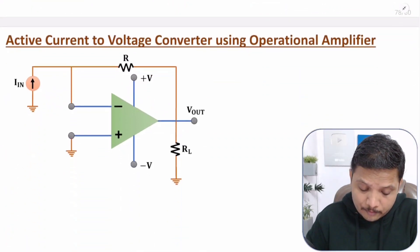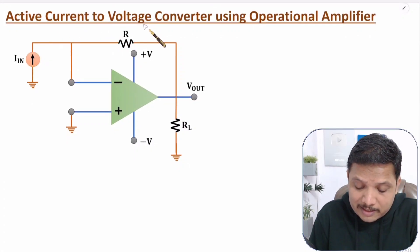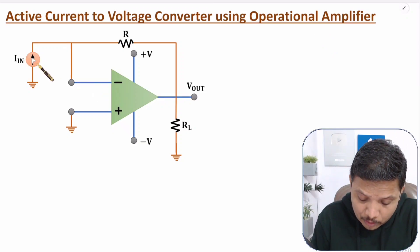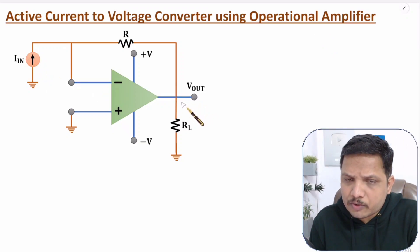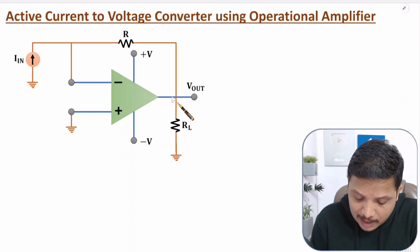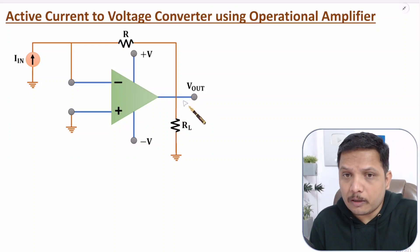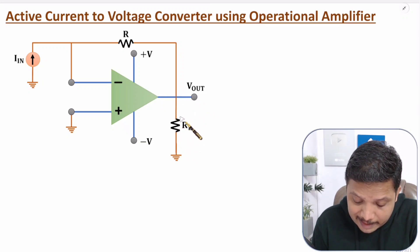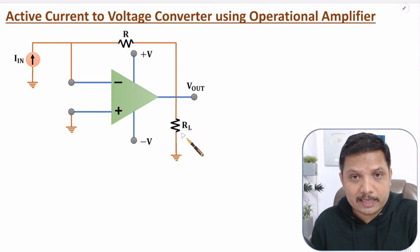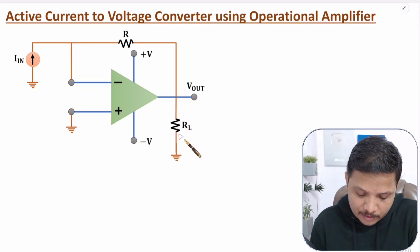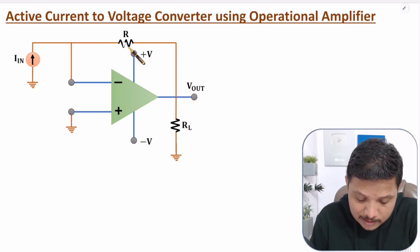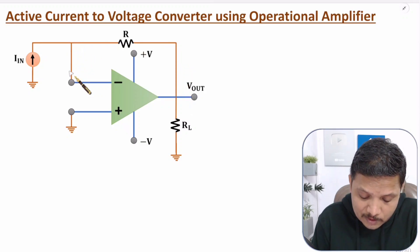Now I will explain the active current-to-voltage converter using an operational amplifier. When converting current to voltage, one important thing to understand first is that the output voltage should be independent of load resistance. We will be measuring output across RL, but this Vout should be independent of RL. In this circuit, we have negative feedback with the use of resistance R.